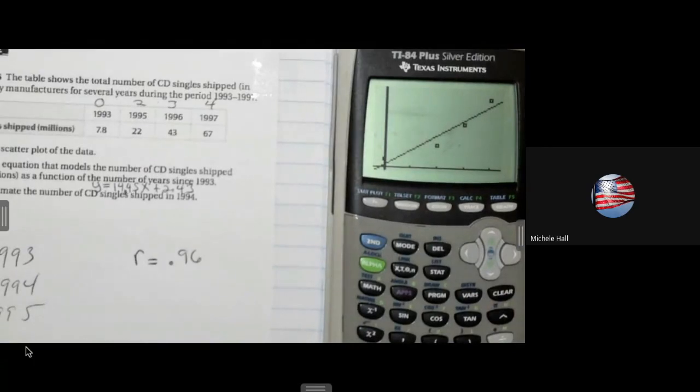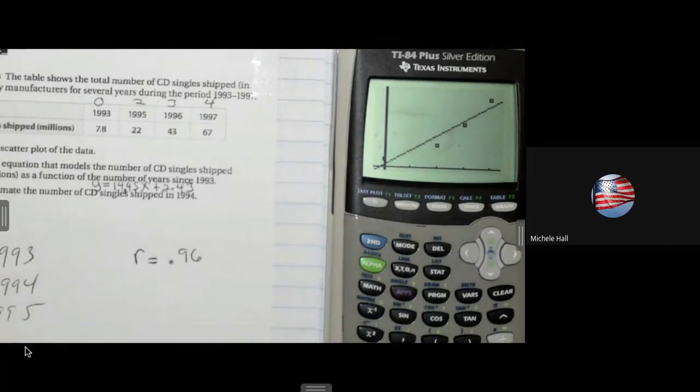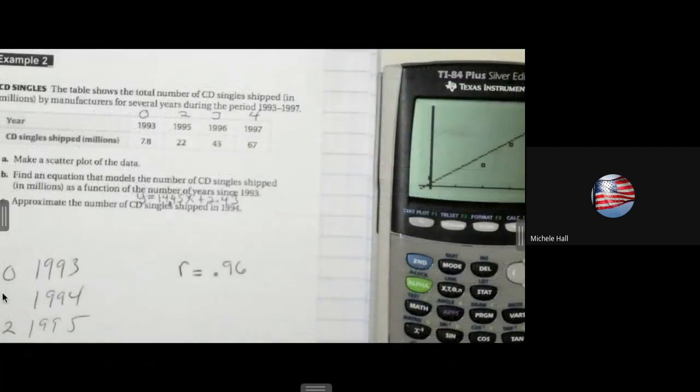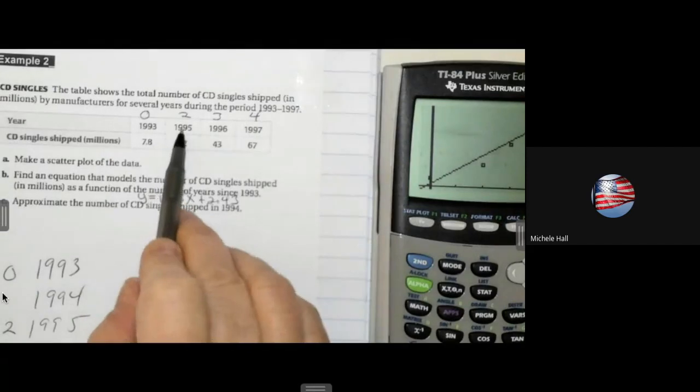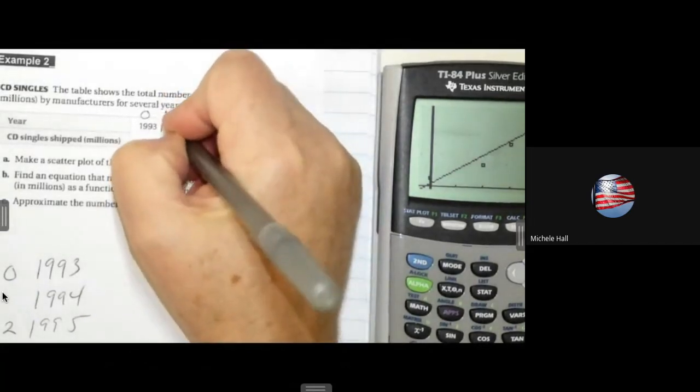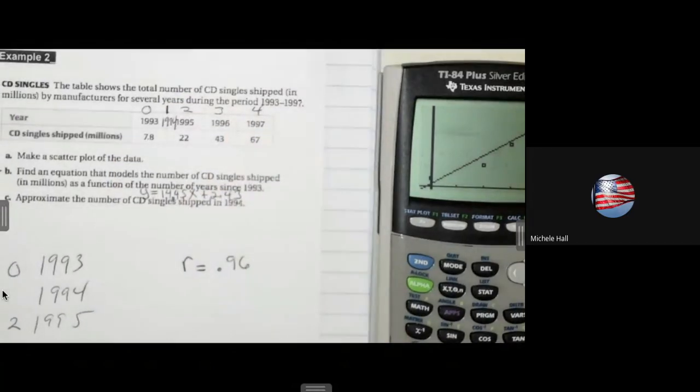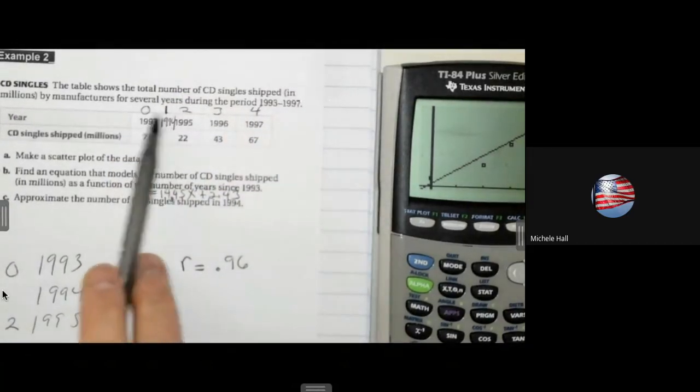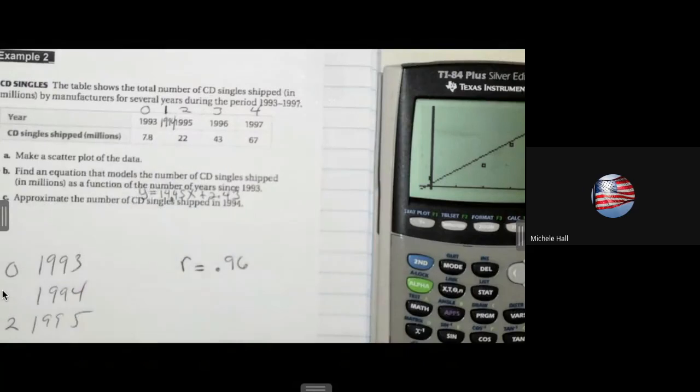It says approximate the number of CD singles shipped out in 1994. So there are many different ways that you can go about finding out what 1994 is, what number, what x number is 1994. X is 1, right? Because if 95 is 2, that means 1 for 1994. 1. I'm looking for when x is 1, then that will tell me what's going on in 1994.